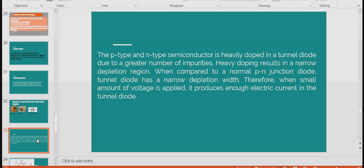How it is manufactured? What is the structure of tunnel diode? The P-type and N-type semiconductor is heavily doped compared to P-N junction diode, Zener diode, and Schottky barrier diode, due to greater number of impurities creating a narrow depletion region. When compared to a normal P-N junction diode, tunnel diode has a narrow depletion width. Therefore, a small amount of voltage is supplied, it produces enough electric current in the tunnel diode. So tunnel diode is heavily doped and has very minimum depletion width. The small forward bias is enough to switch on the tunnel diode from off-state to on-state.